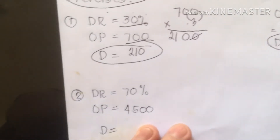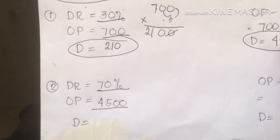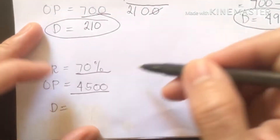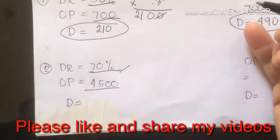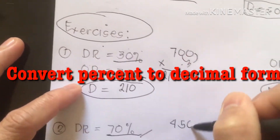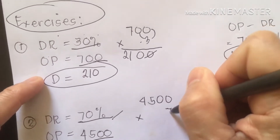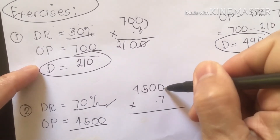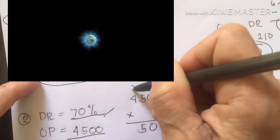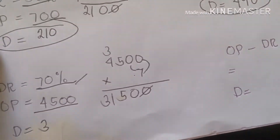Let's proceed to number 2. We have 70% discount rate and the original price is 4,500 — for example, a sofa or furniture. We multiply: 4,500 times 70% (0.7). Converting to decimal form and multiplying: our discount is 3,150.